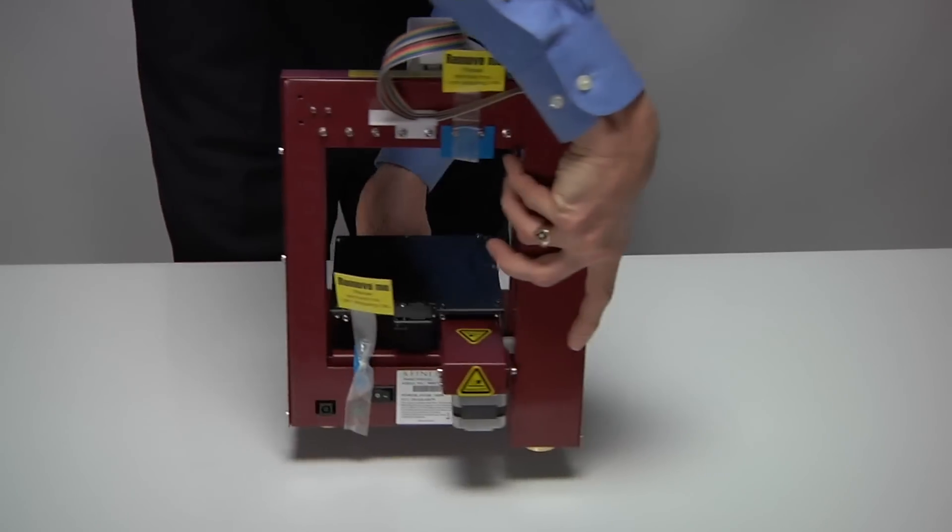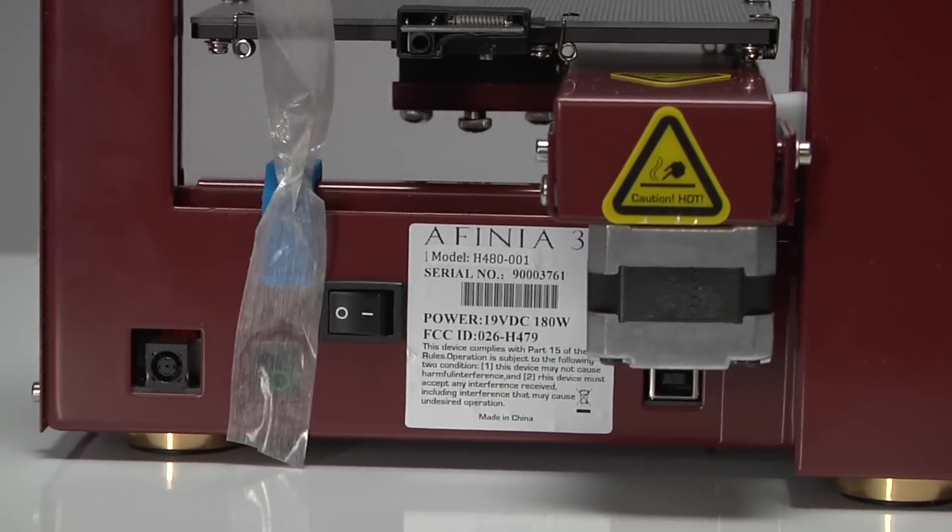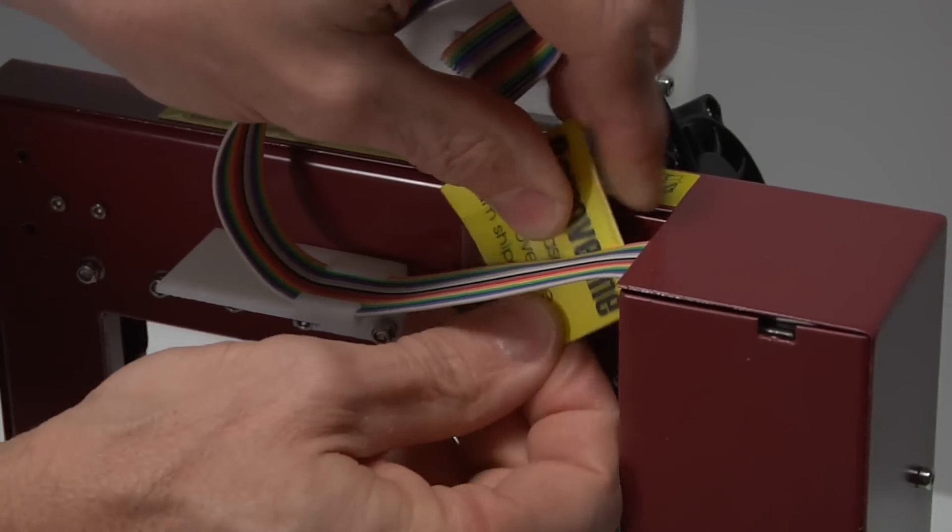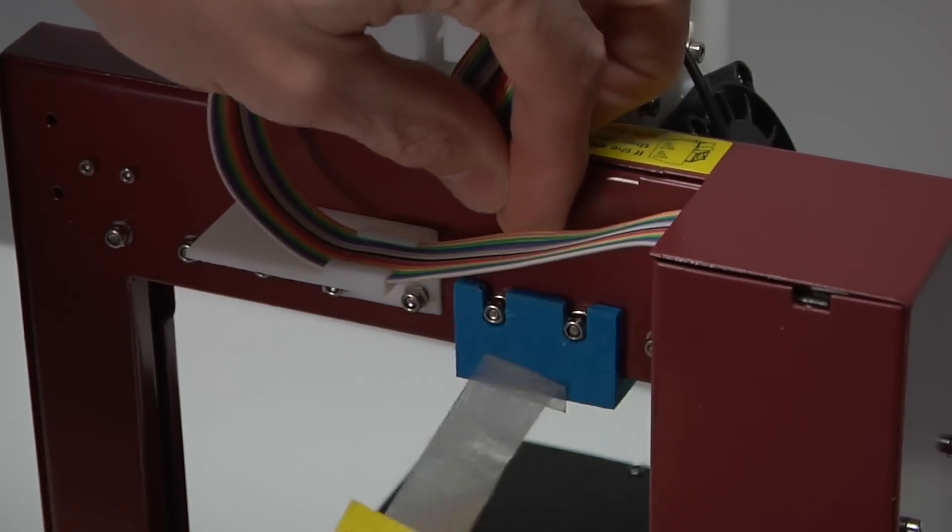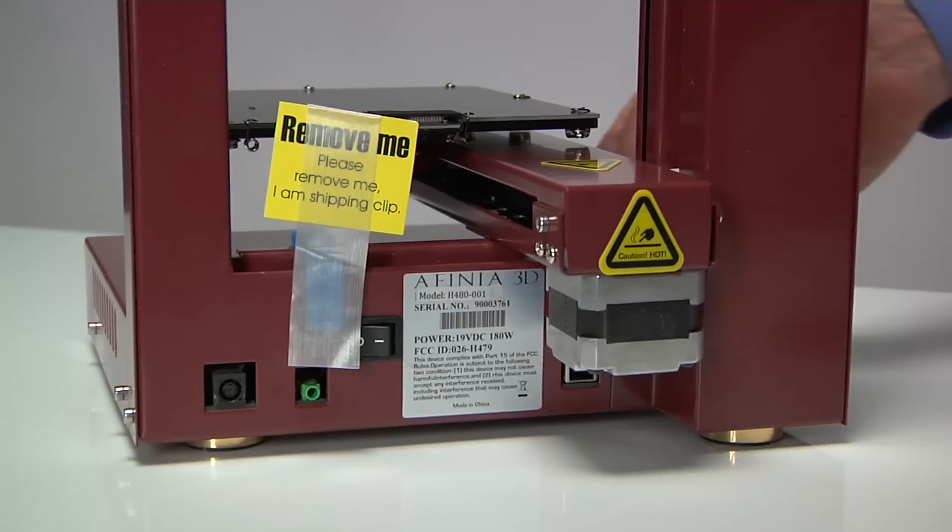Turn the printer so the back is facing you. The serial number can be found here also. There are two packaging clips that must be removed before your printer is powered on. The first clip is here. Remove the tape, then slide the clip and pull it off.